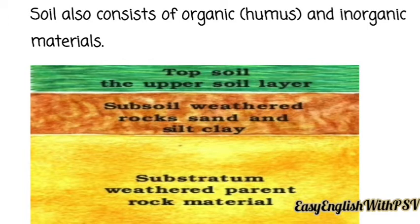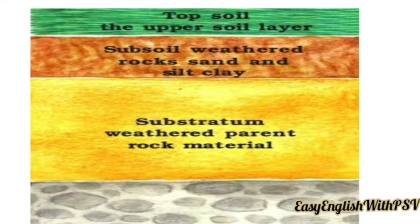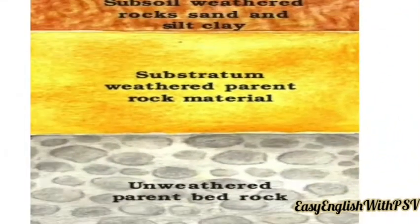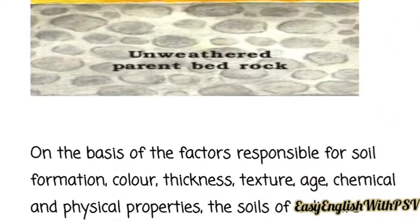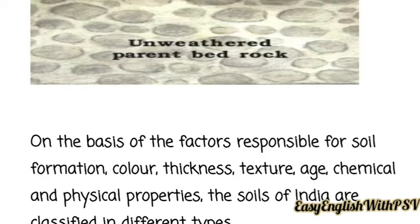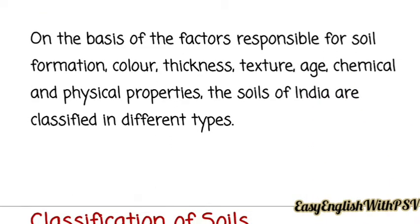The soil structure includes the topsoil — the uppermost layer — followed by subsoil just below it, which is also known as weathered rock, sand, silt, and clay. Below that is the sub-stratum without parent rock material, and at the base is the unweathered parent bedrock.